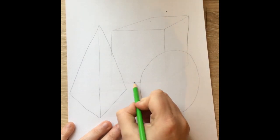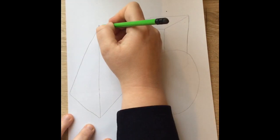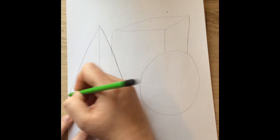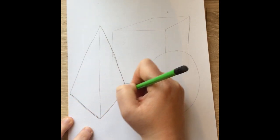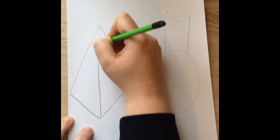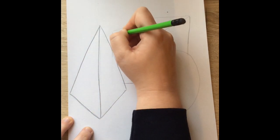Now that I have all three of my three-dimensional shapes drawn, I'm just going to go over it and darken up the lines so I know exactly the different planes that I have to work with.